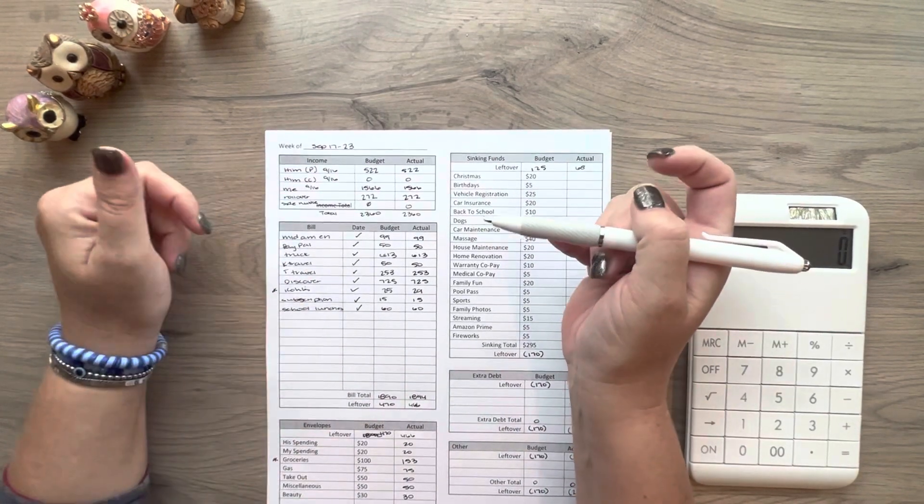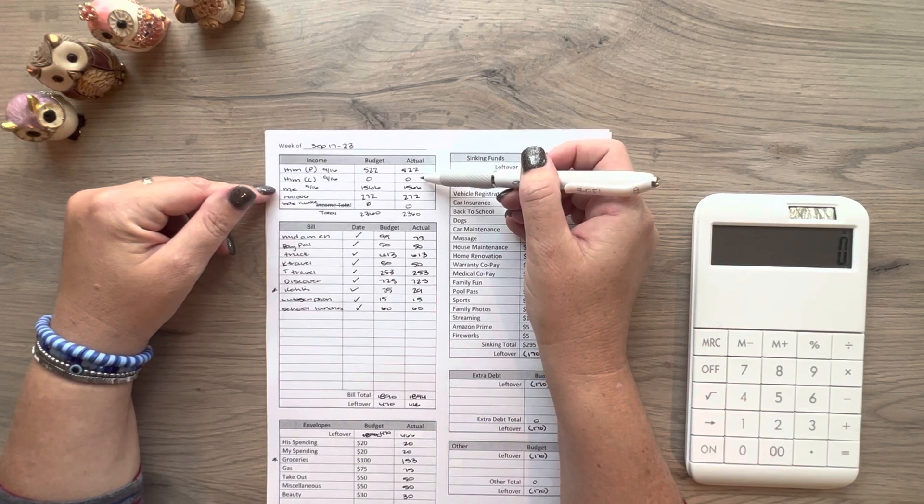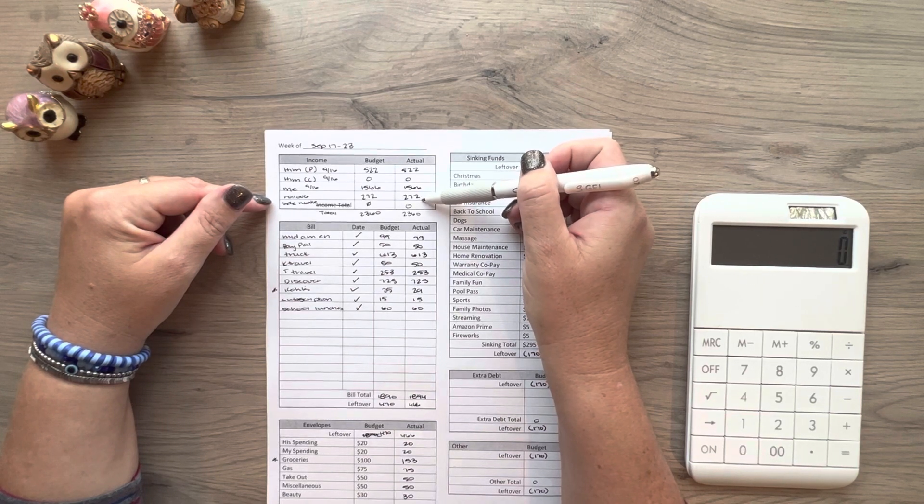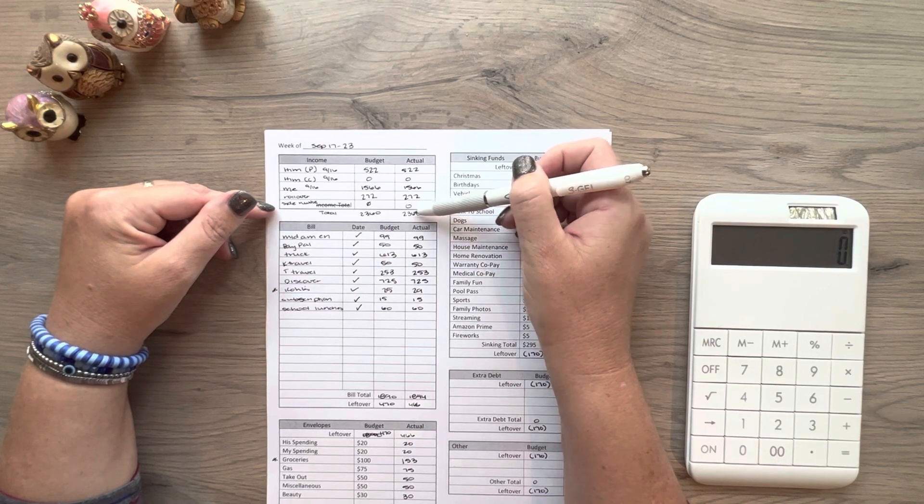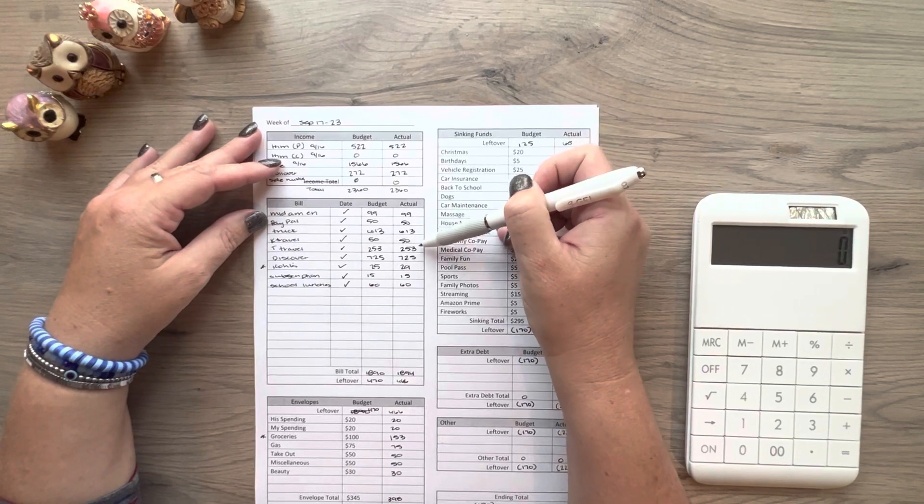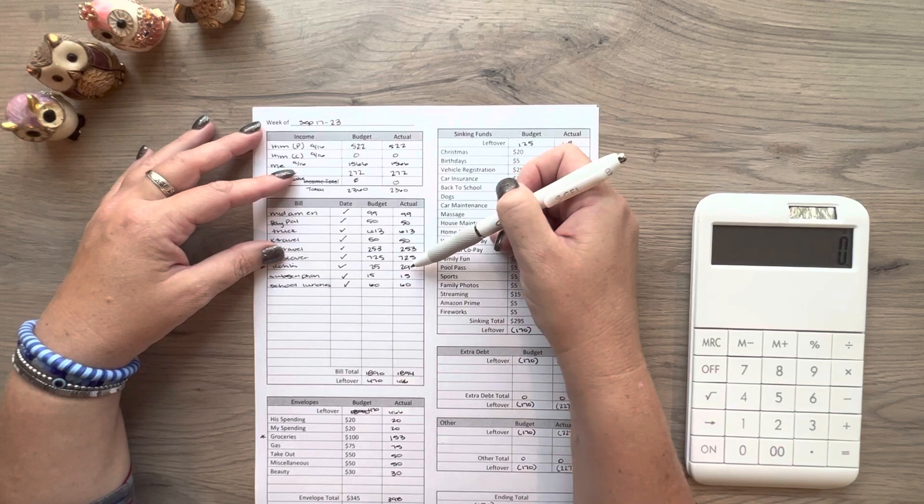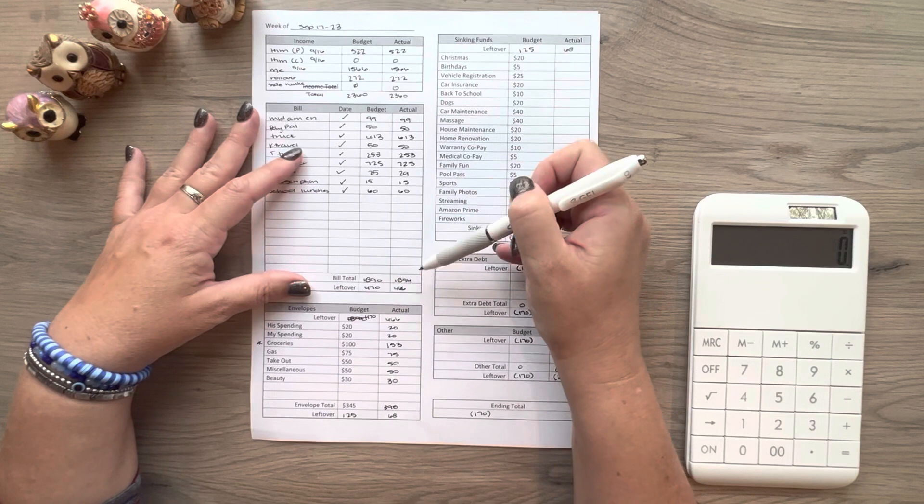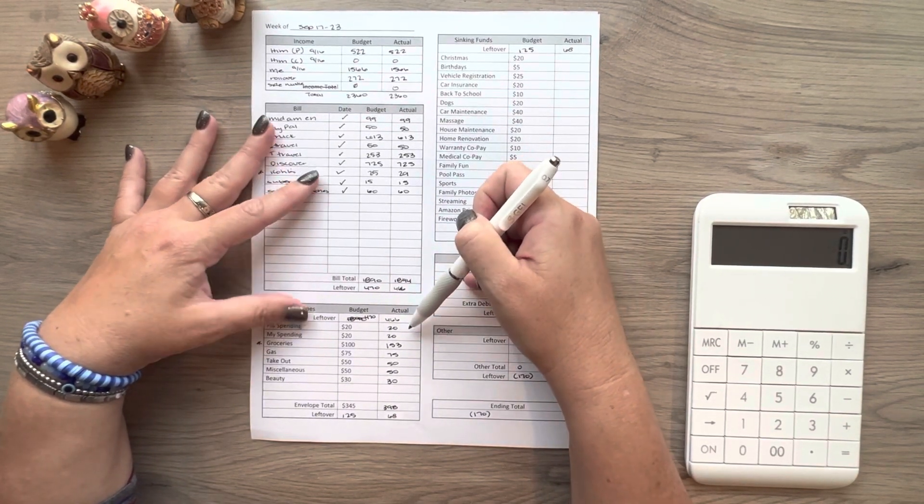So this is for last week. My husband's paycheck was 522. I was 1566. We did roll over 272 and we didn't put anything from our side hustle in and so it was a 2360 total for the week for income. And then all of these were the same except my Kohl's. I was going to do the minimum payment. I thought it was 25, but it was actually 29. I did the $29 and that came out to 1894 instead of 1890, which left us a total of $466 to roll over to the next section.